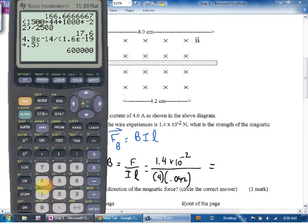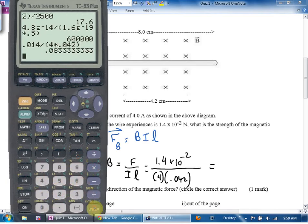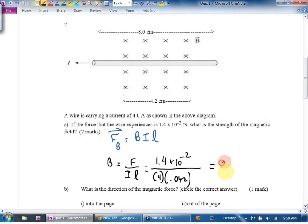1.4 times 10 to negative 2 divided by bracket 4 times 0.042. 0.0833, so...